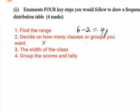For the class width, if we have a class like 5–10, the lower class boundary is 4.5 and the upper class boundary is 10.5. We subtract the lower from the upper to get the width: 10.5 minus 4.5. The fourth and last step is to group the scores and tally — using tally marks to count how many times each score appears in the distribution.